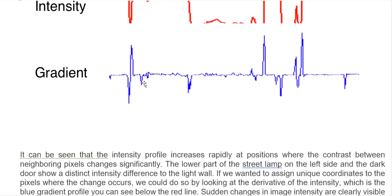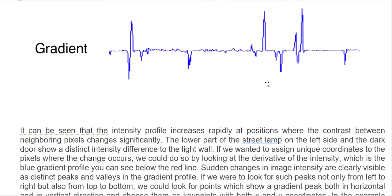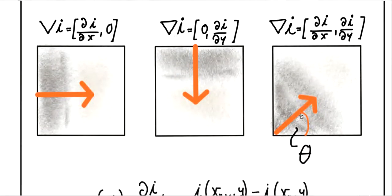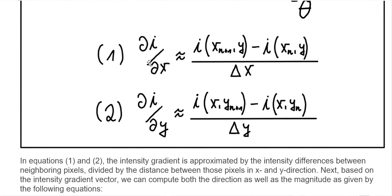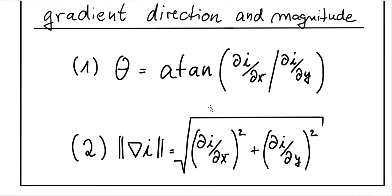The change can be seen in the bits, which show how rapidly the transition from bright to dark color occurs. Based on this observation, the first step in key point detection is the computation of the gradient image. Mathematically, the gradient is the partial derivative of image intensity in both x and y directions. We find the derivative in x, in y, and in both x and y. We also find the magnitude and direction of the gradient using the corresponding formulas.